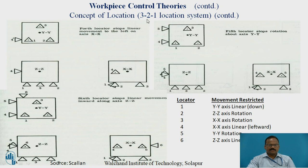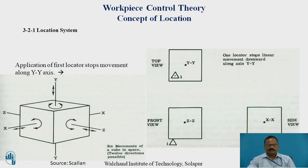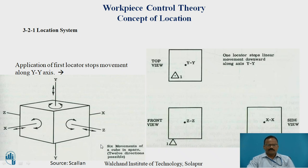Why have we taken three pins? If we take only two, there is a possibility that the workpiece may rotate either clockwise or anticlockwise due to the position of the locator. That is why we do not take just two locators at the bottom. With three points, we define a plane, since a plane passes through three points. If we add a fourth locator at the bottom plane, it would be unnecessary — there is no need for it. This is called redundant.